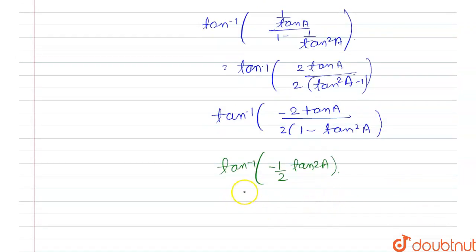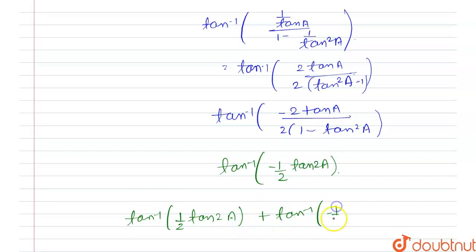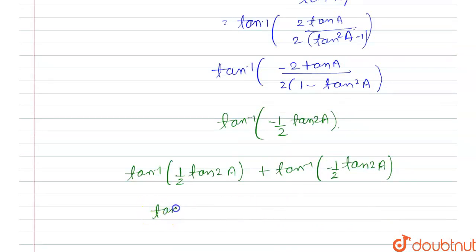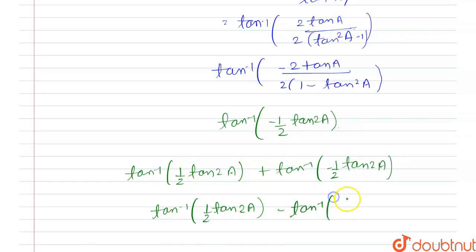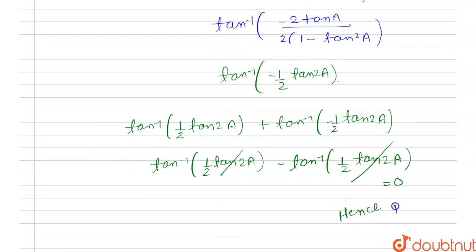Now substituting back, we have tan inverse of (1/2 · tan 2a) plus tan inverse of (−1/2 · tan 2a). Using the property that tan inverse of (−θ) equals minus tan inverse of θ, the second term becomes −tan inverse of (1/2 · tan 2a). These two terms cancel out, giving 0. Hence proved.